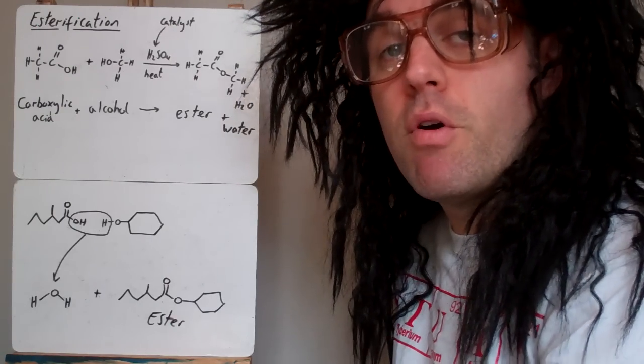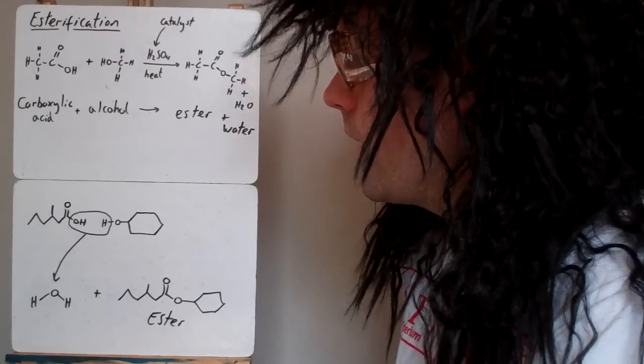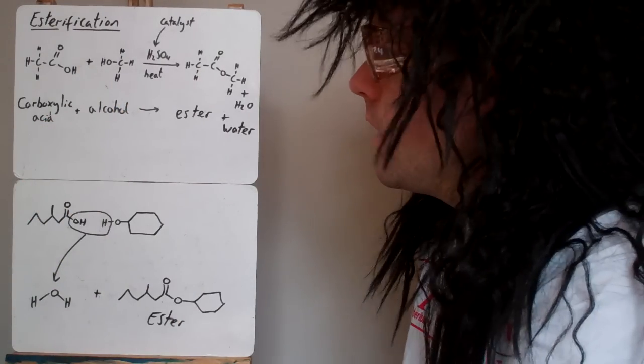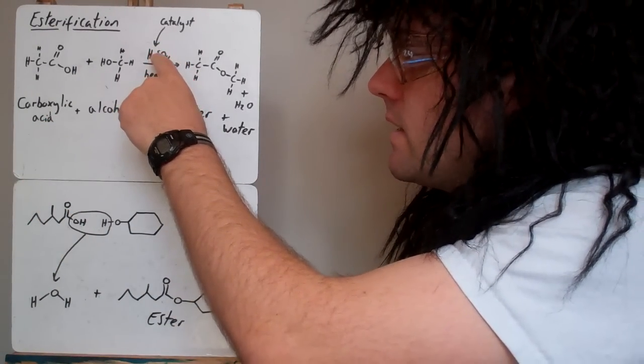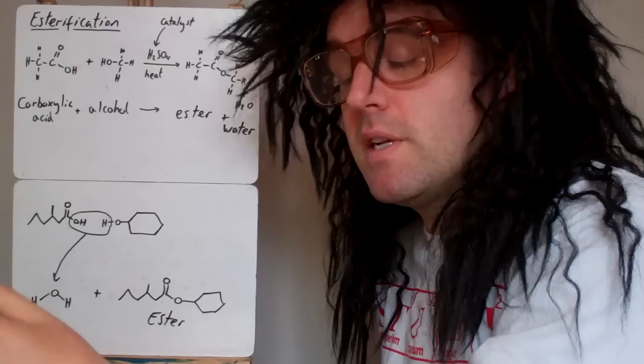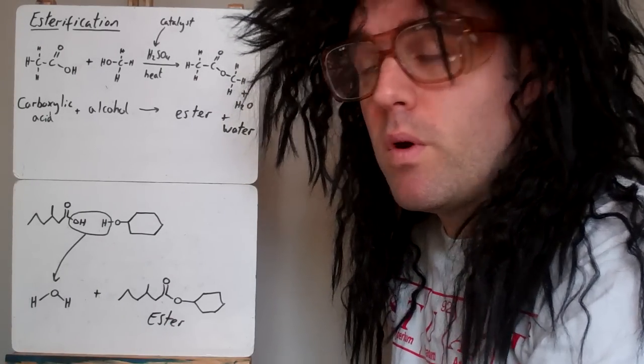This video is about esterification, the process of making esters. We can make esters from a carboxylic acid reacting with an alcohol. The conditions we need are a catalyst, concentrated H2SO4, and heat. Quite often it's just done in a test tube inside a beaker of boiling water.